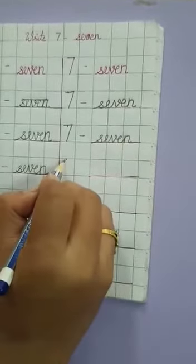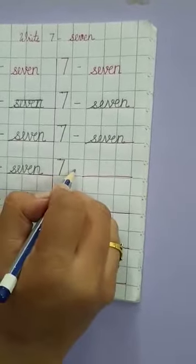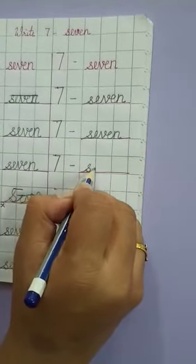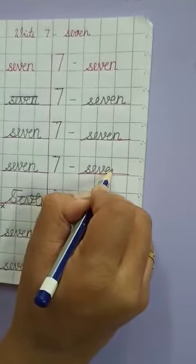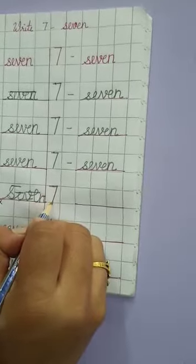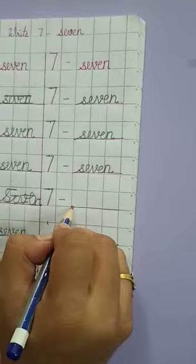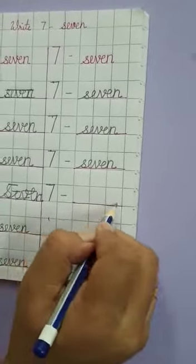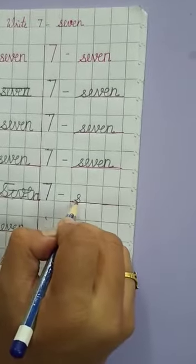The spelling of 7 is S, E, V, E, N, 7. The spelling of 7 is. Each letter should touch the line above.